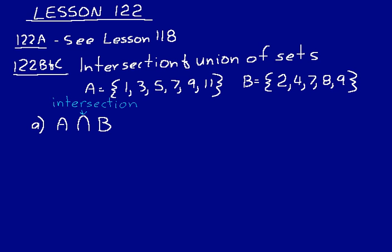So A intersection B means where both of those sets overlap. What numbers intersect or overlap in those sets? Or what numbers do they have in common, basically?